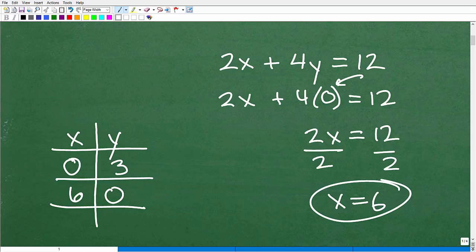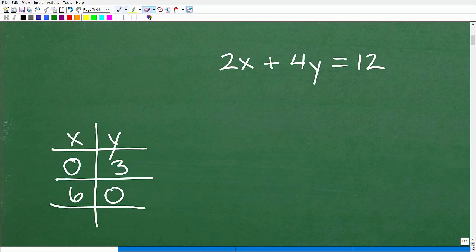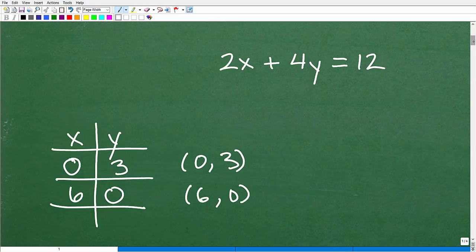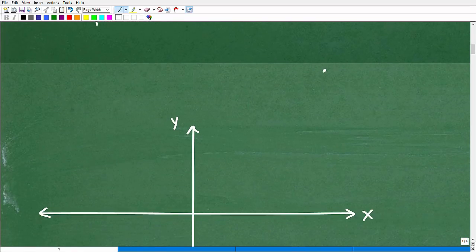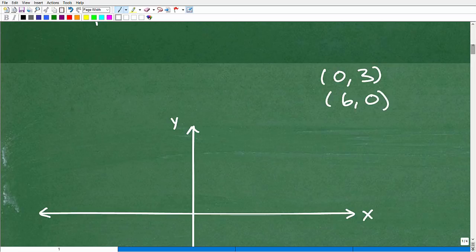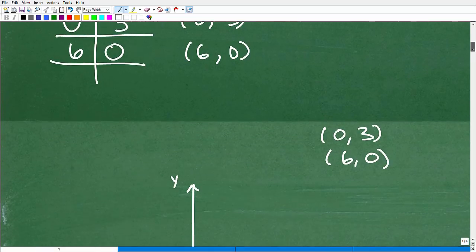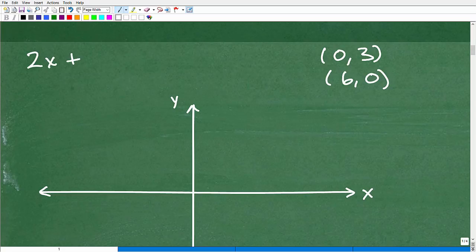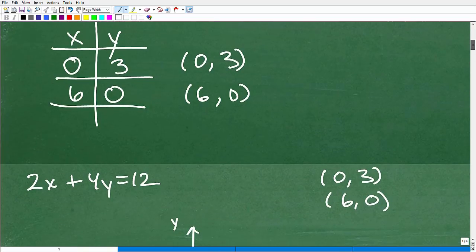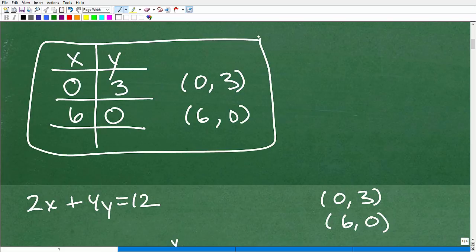All right, so when y was zero, x turned out to be six. So by using this technique, I've constructed or I found two points that are on this line. The points are zero three and six zero. Zero three and six zero. So let's bring this down here. Zero three. All right, zero three and six zero. And again, our equation was 2x plus 4y equals 12. 2x plus 4y is equal to 12.